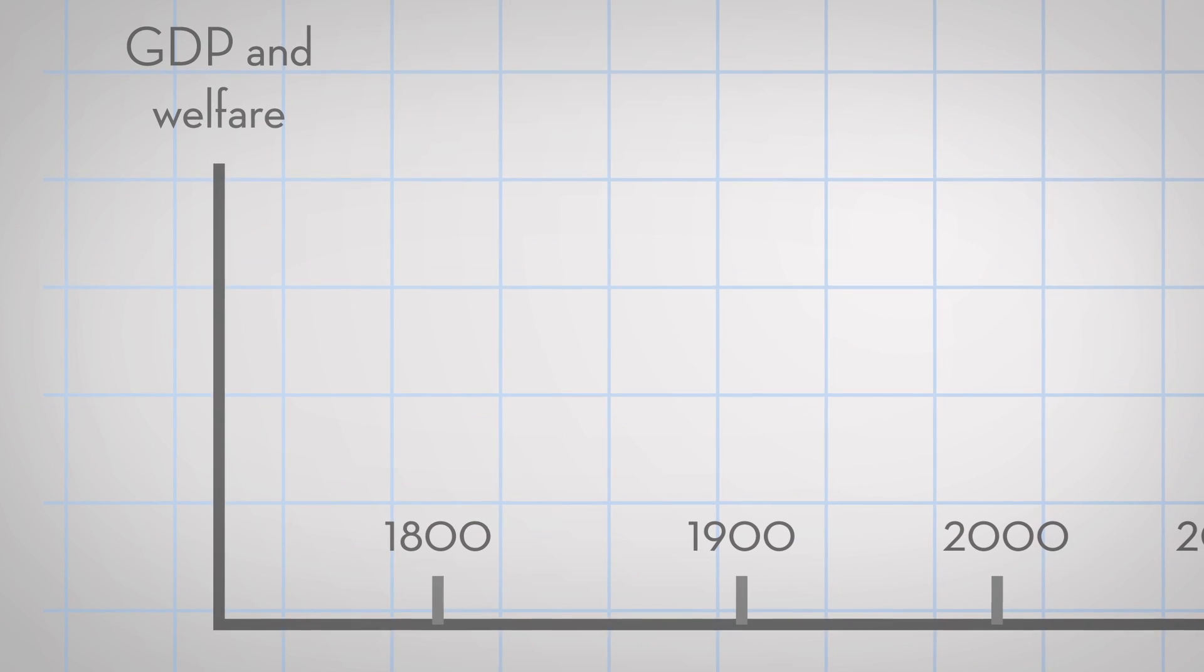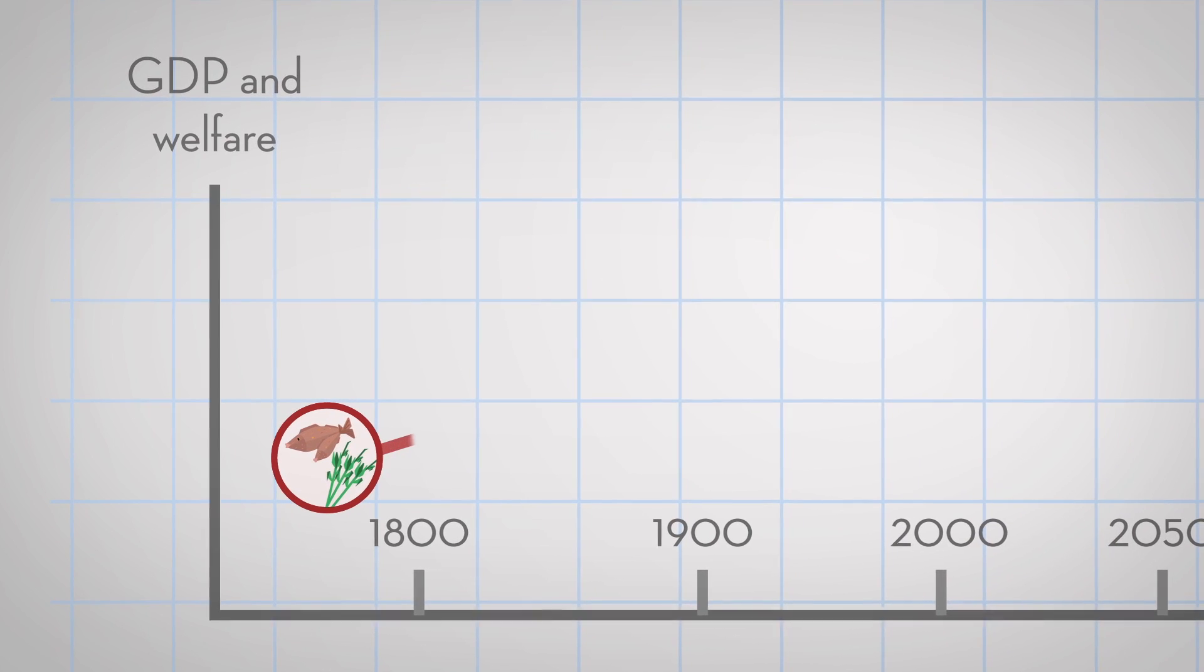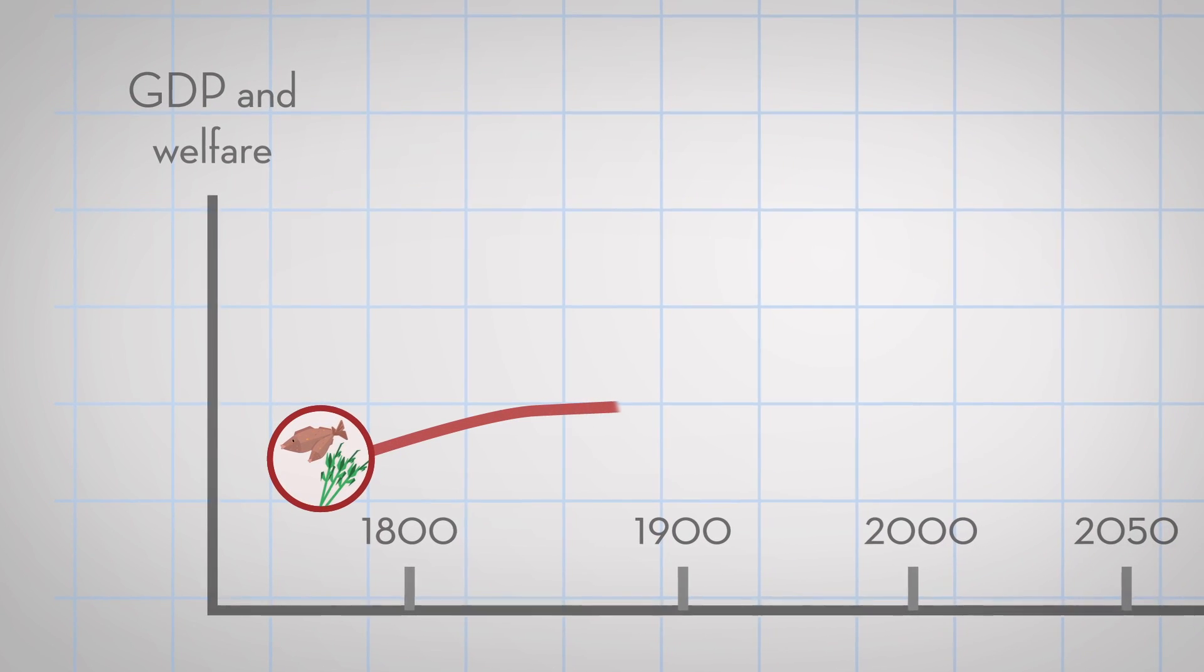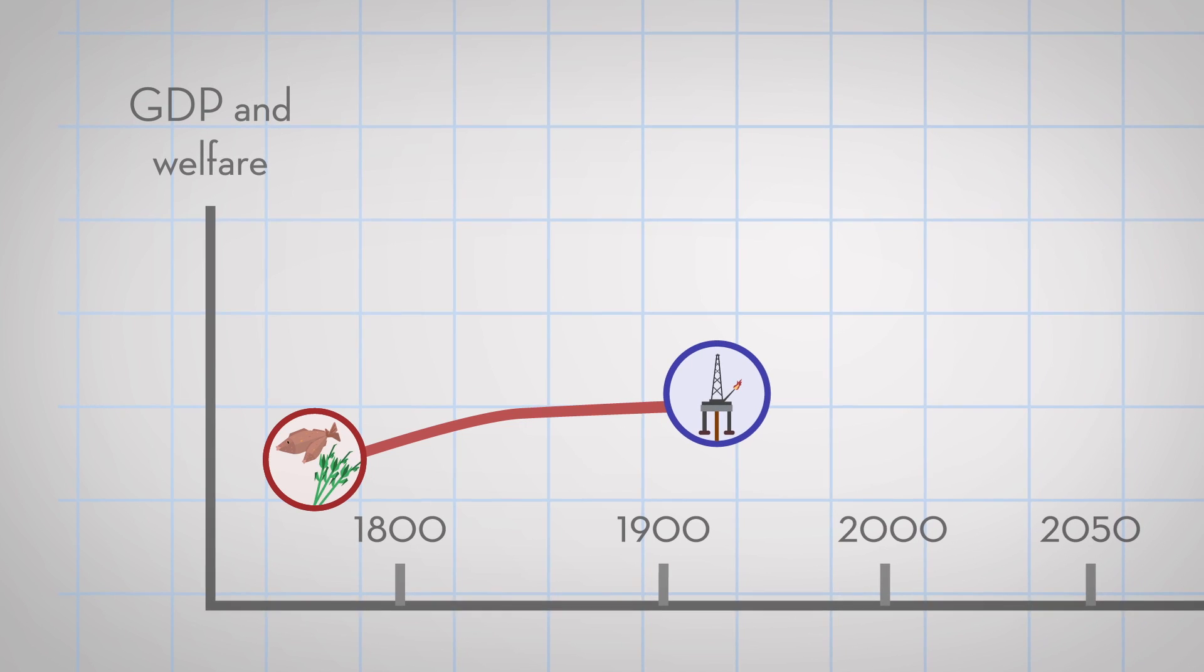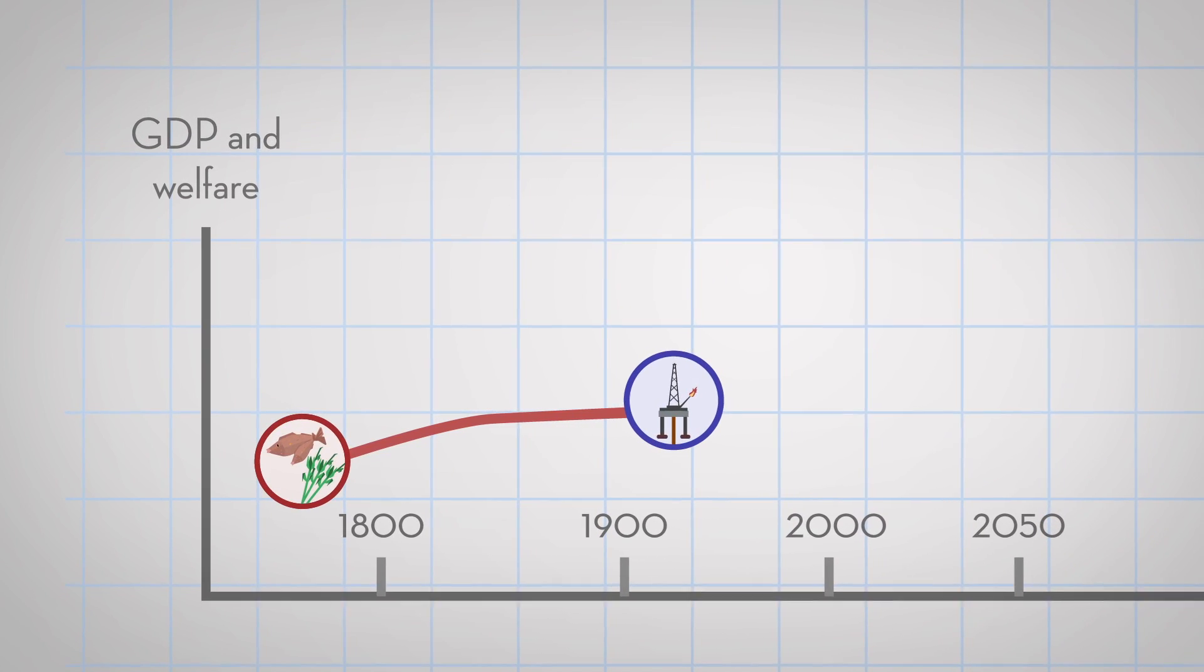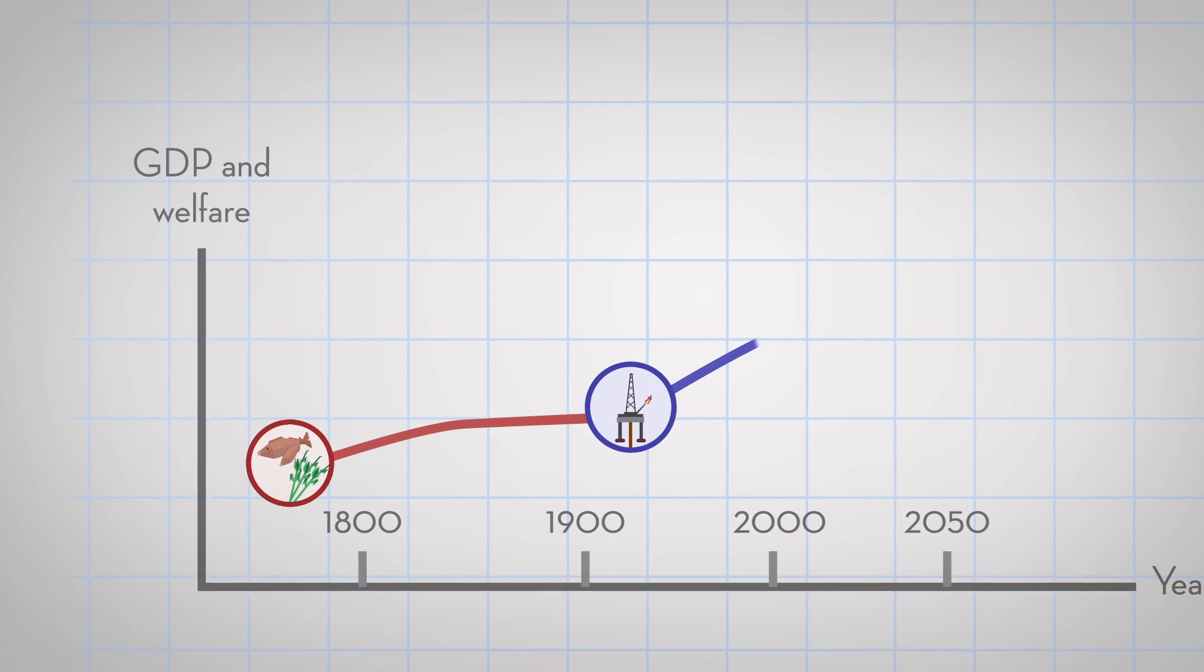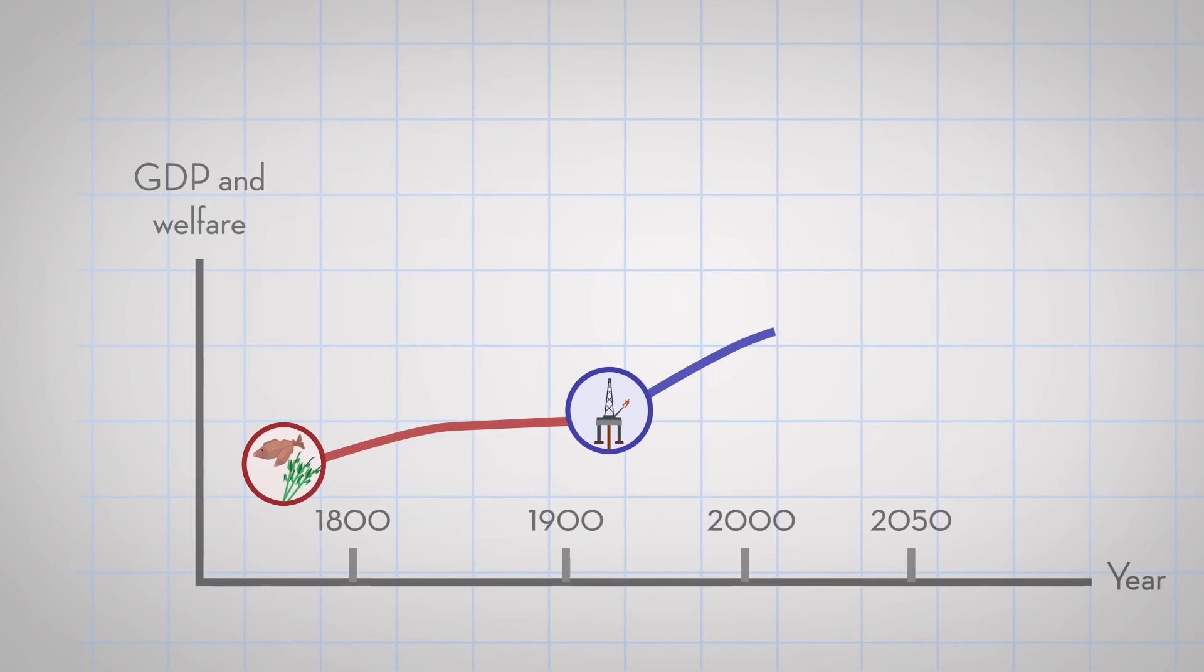Up until the 20th century, we had a nature-based economy where people sustained themselves by farming, forestry and fishing. During the 20th century, oil arrived, giving the world's population access to cheap energy and raw material for most of what we surround ourselves with. In Norway, oil brought about a great increase in welfare.